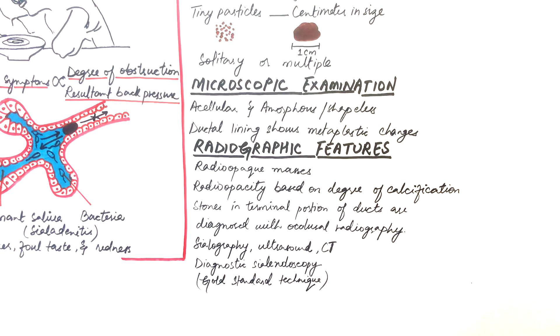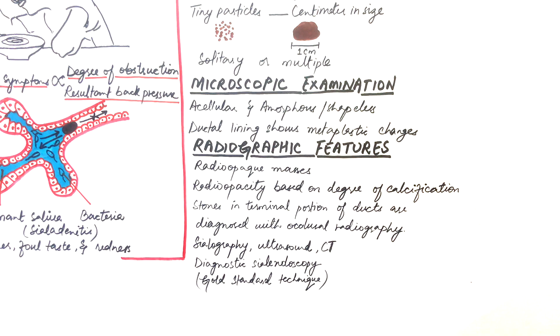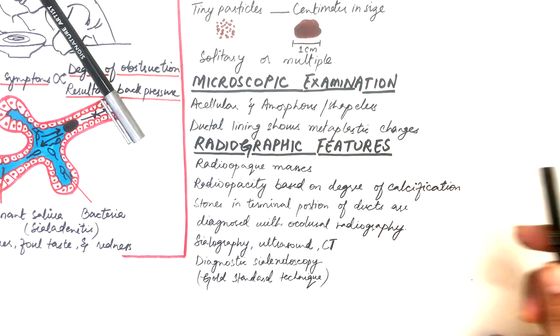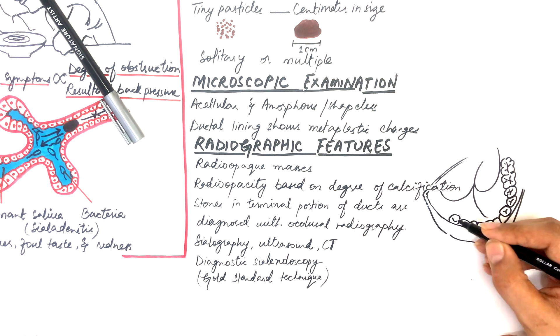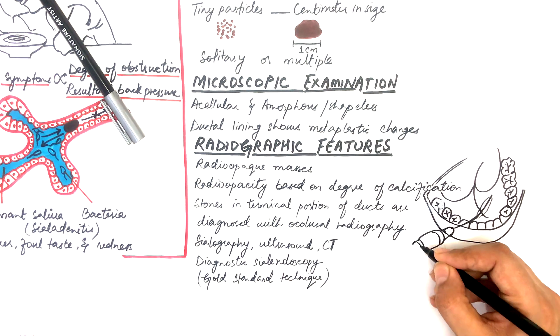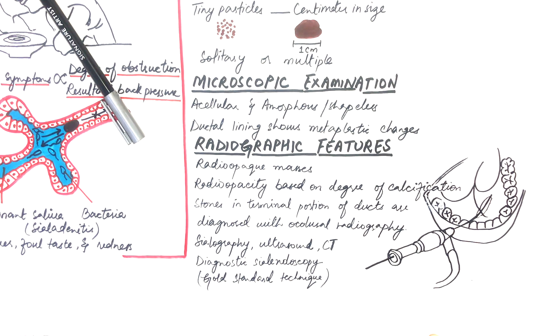Diagnostic sialendoscopy is the gold standard procedure for diagnosis and treatment of salivary gland diseases. In this technique, a small endoscope is inserted within the ductal orifice, allowing visualization of the entire ductal system for any stones, strictures, or adhesions.